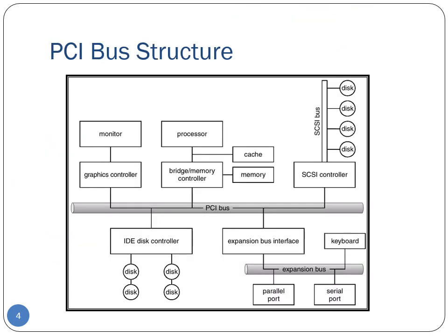Here is the system architecture I was alluding to. We have the CPU, main memory, and cache, and then several different I/O devices — monitors, disks, keyboard, and so forth — all connected using a bus. This is the PCI bus, which stands for Peripheral Component Interconnect.